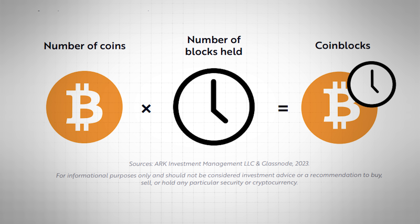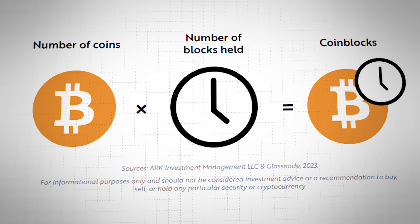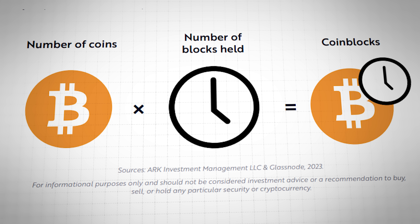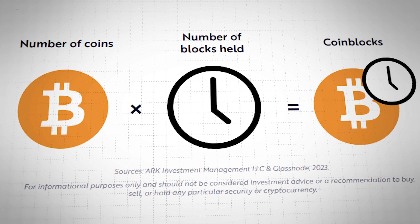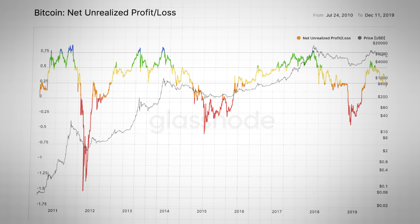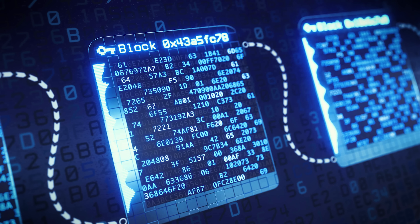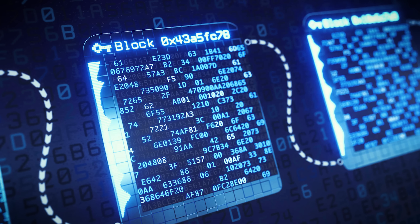This ties into the second concept: the coin-blocks measurement. The number of BTC held times the number of Bitcoin blocks this BTC has been held for equals coin-blocks. So if you held one BTC for 10 blocks, the coin-blocks would be 10. On-chain analytics platforms already track how long it's been since a BTC was last moved, but they track this based on the number of days or dollar value. This report looks specifically at the number of blocks.